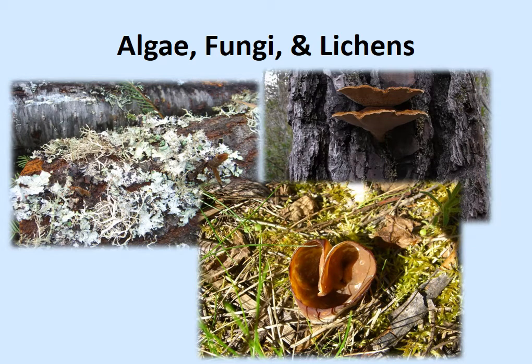Alright folks, so we're starting into the actual identification part of the class. We've been talking about kind of broad stuff — taxonomy, just understanding how living things are organized — and broad-scale things like climate. Keep in mind that all of those things, like climate and the different topography we have in California, all have an effect on what types of living things can live in different places.